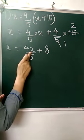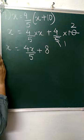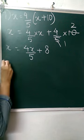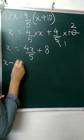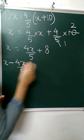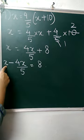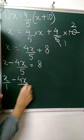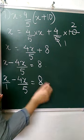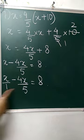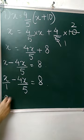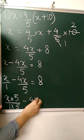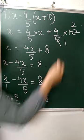Now, this is a variable, so it will be shifted to the left-hand side by transposing. It is positive, so plus becomes minus. So x minus 4x upon 5 is equal to 8. This means x upon 1 minus 4x upon 5 equals 8. Now multiply through by 5 so the denominators become the same: x into 5 over 5 minus 4x upon 5 is equal to 8.